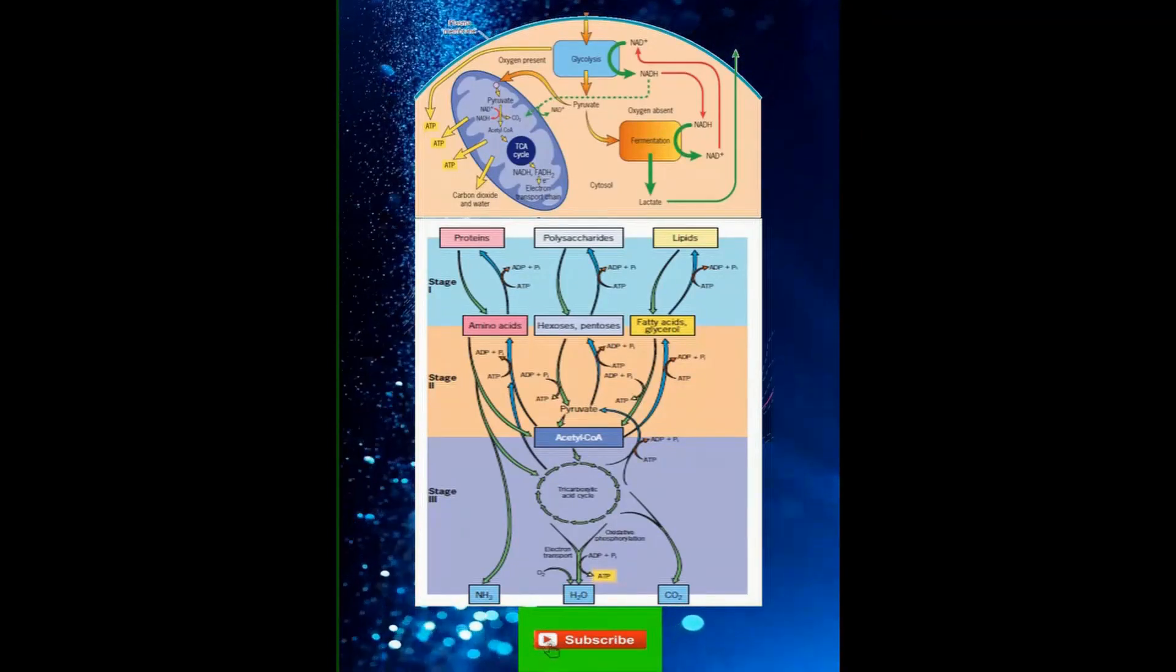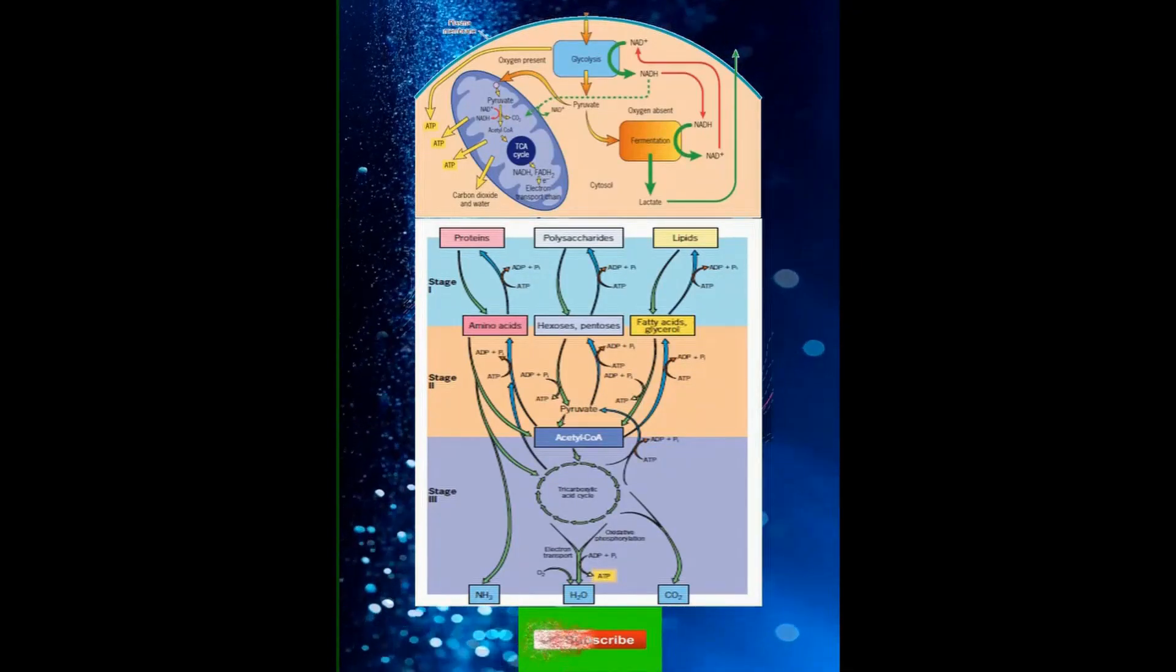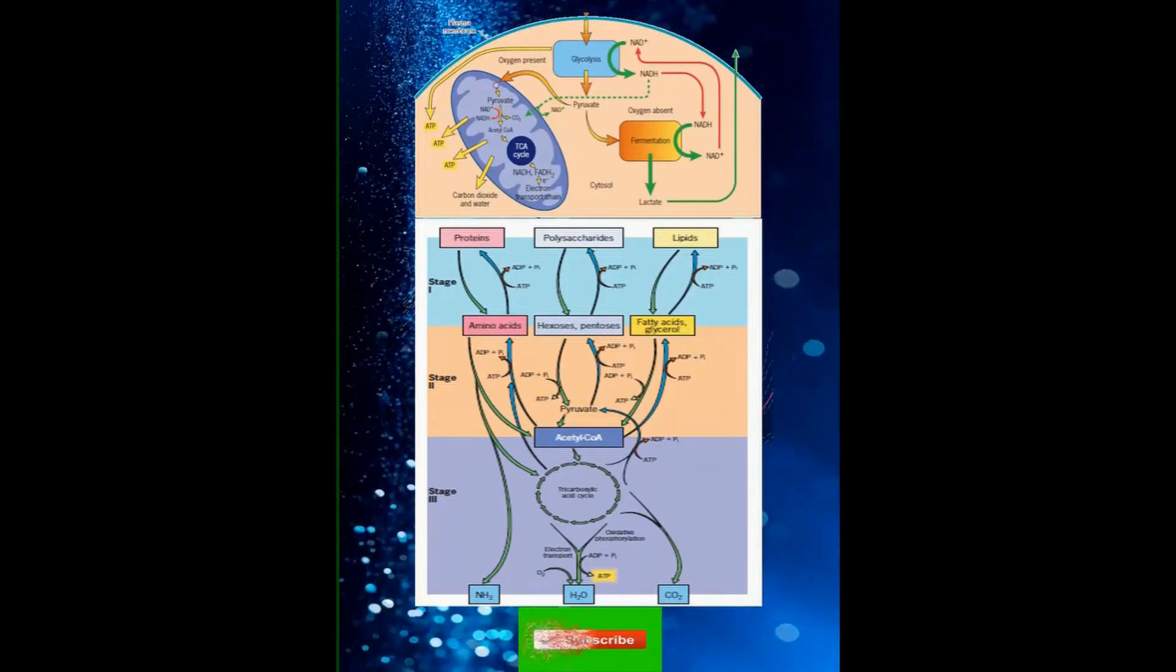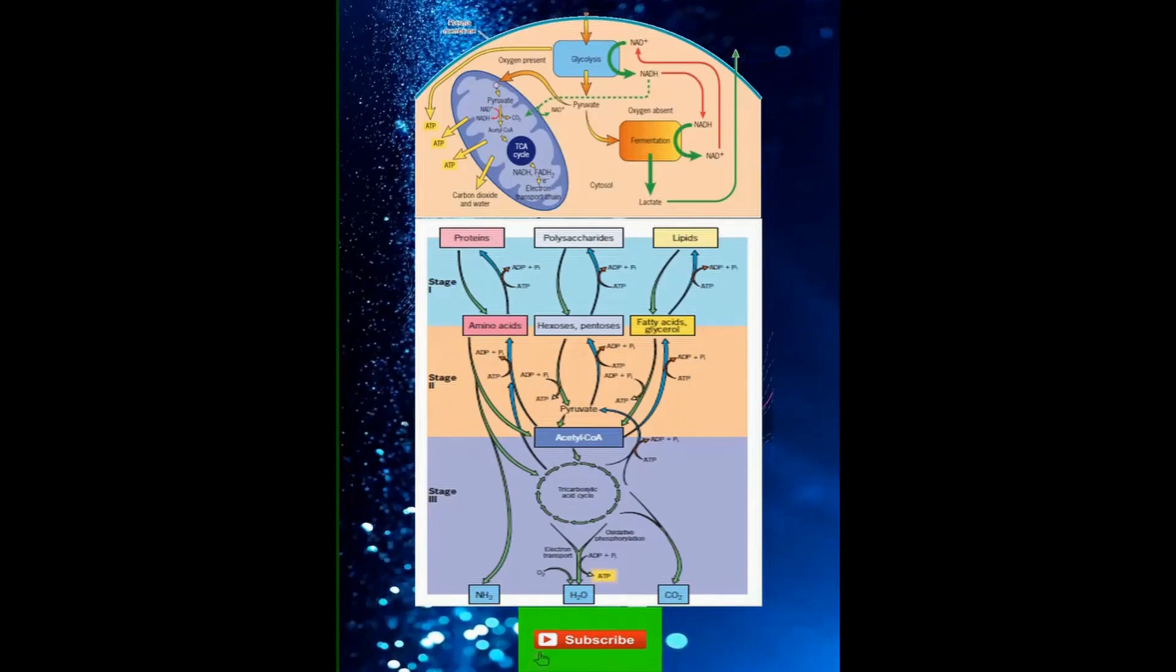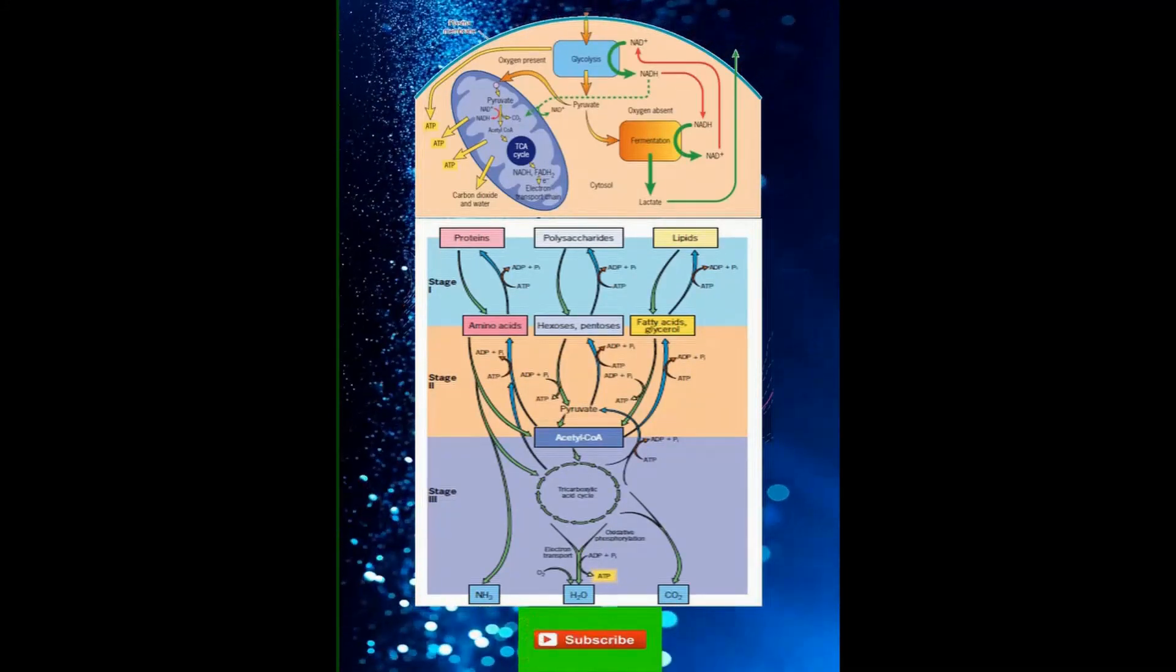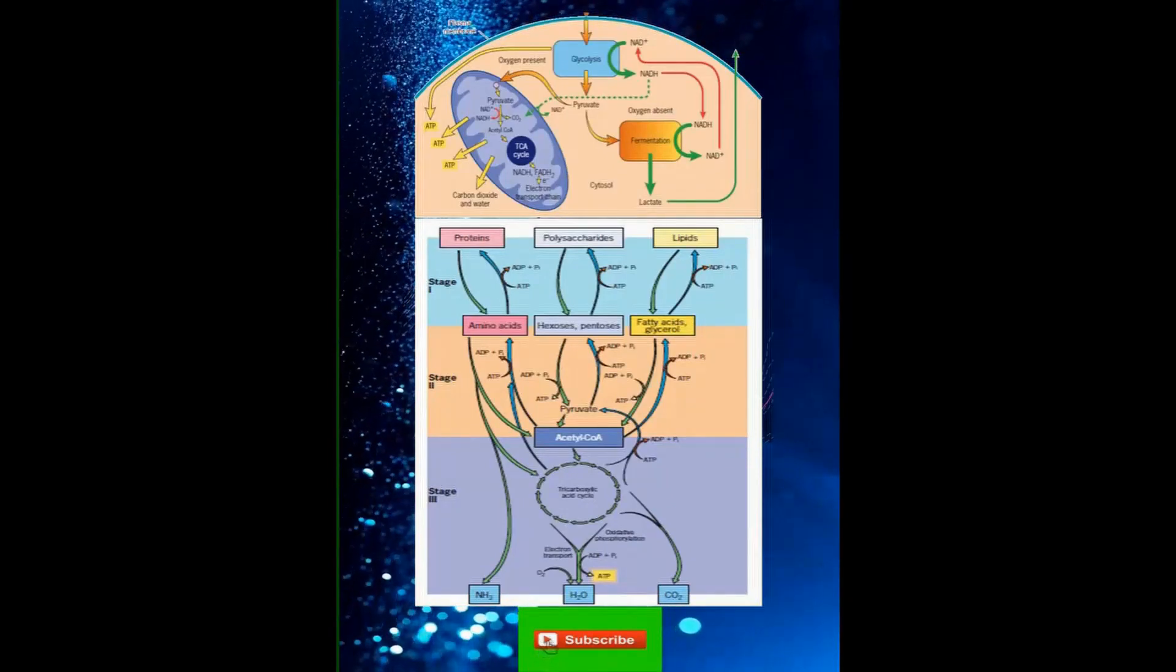In the presence of oxygen, aerobic organisms are able to extract large amounts of additional energy from the pyruvate and NADH produced during glycolysis, enough to synthesize more than 30 additional ATP molecules.